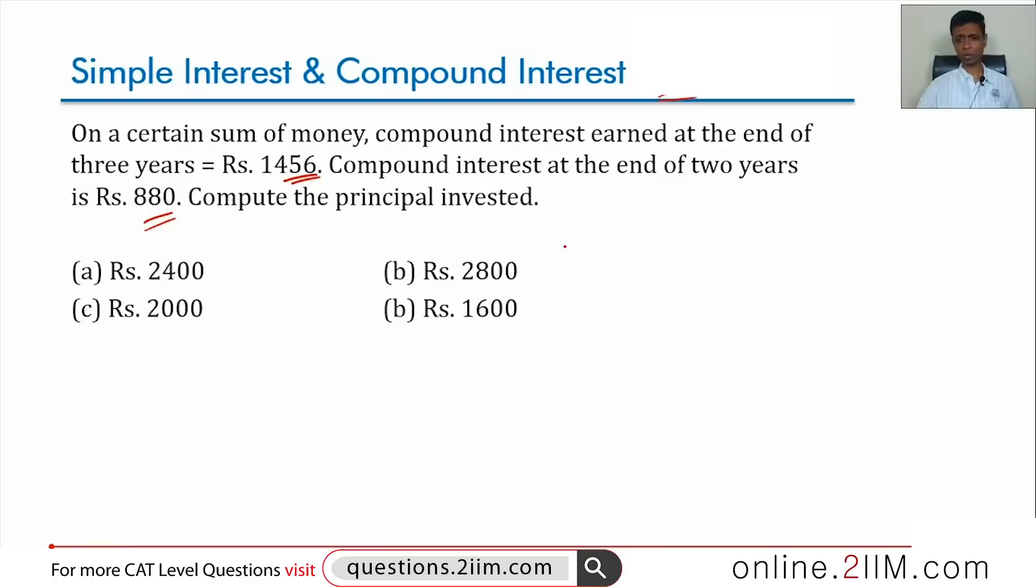Very important, we know the formula for amount, amount is P into 1 plus R by 100 whole power n on a compound interest basis. Compound interest at the end of 3 years is P into 1 plus R by 100 whole cube minus P. Compound interest at the end of 2 years is P into 1 plus R by 100 whole square minus P.